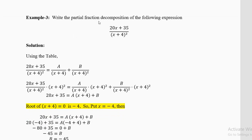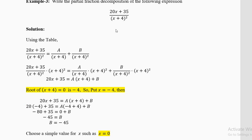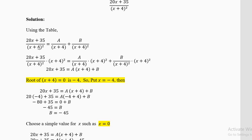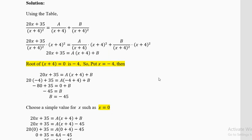Example 3: write the partial fraction decomposition of (20x + 35)/(x + 4)². From the table, the factor is repeating, so the structure is A/(x + 4) plus B/(x + 4)². Multiply both sides by (x + 4)²: on the left you get 20x + 35; on the right, A(x + 4) plus B.